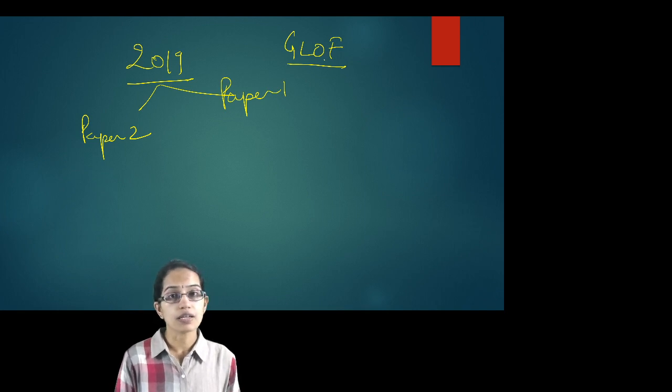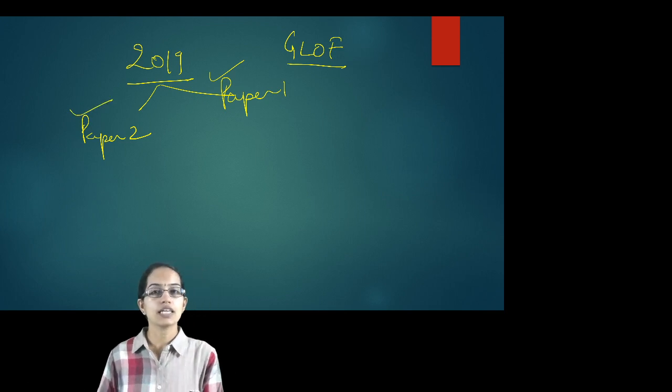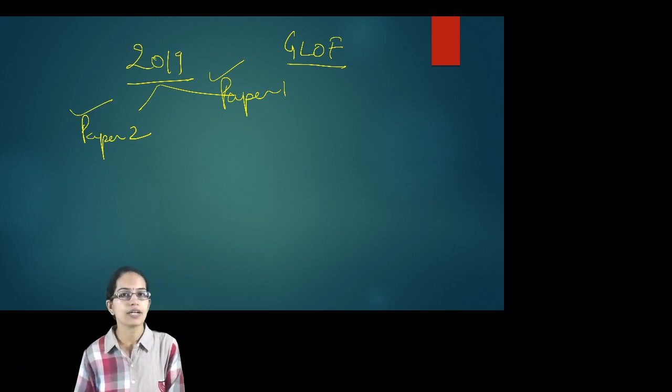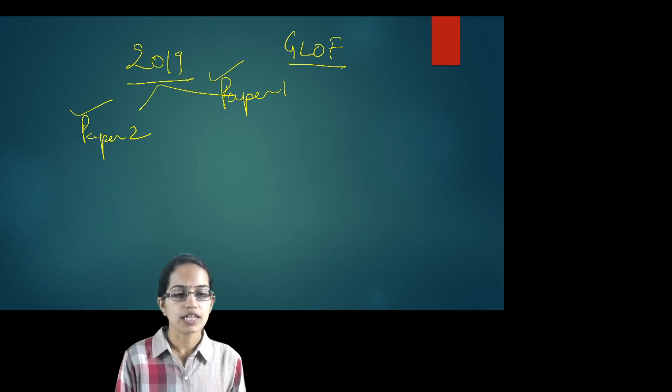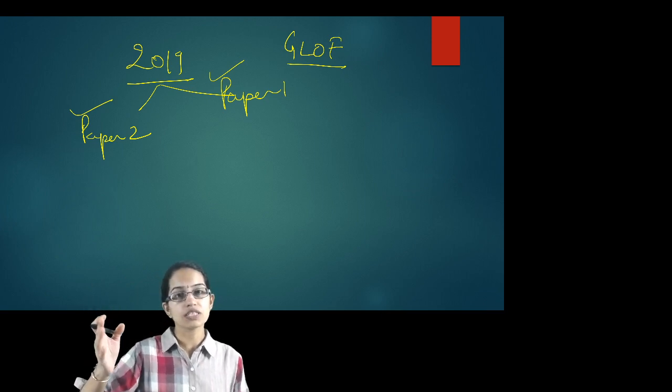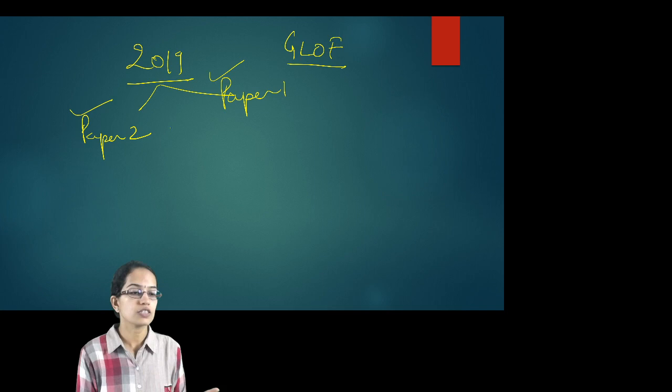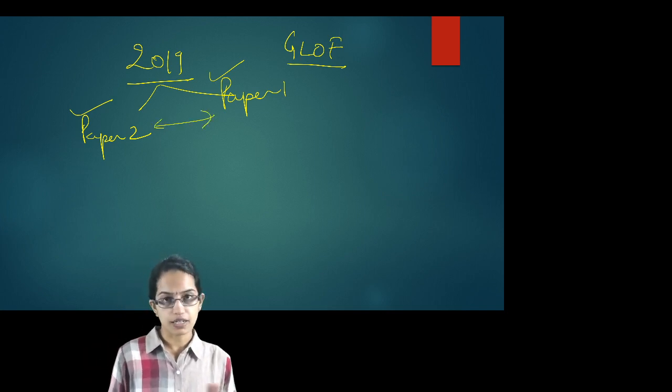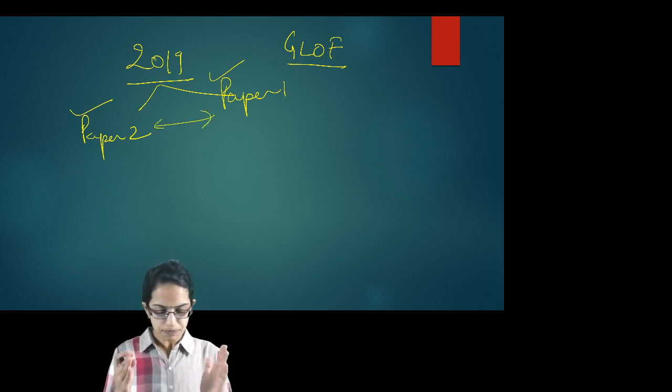Urban issues, as I had mentioned, are very important. There were two questions on urban issues, both under paper 1 and paper 2. Under paper 1, the theme was related to urban climate. Under paper 2, it was related to the vertical development of the cities, the growth of the slums. Both the aspects of urban areas were covered under paper 1 and paper 2 as well.